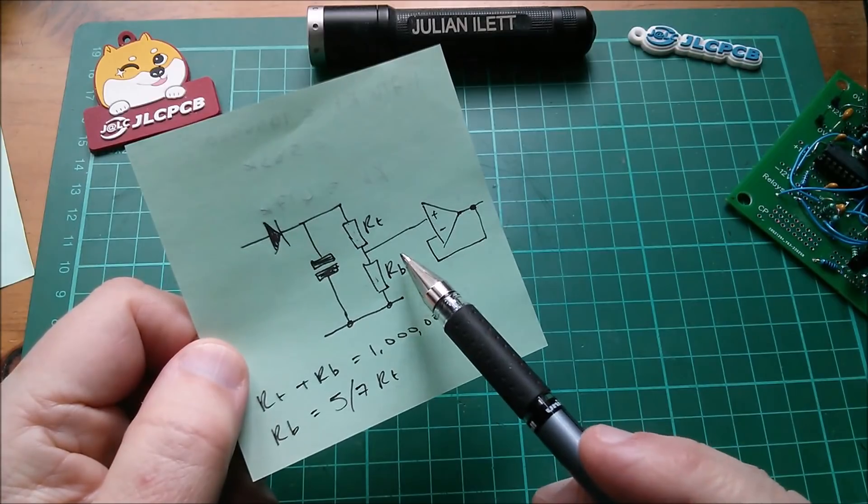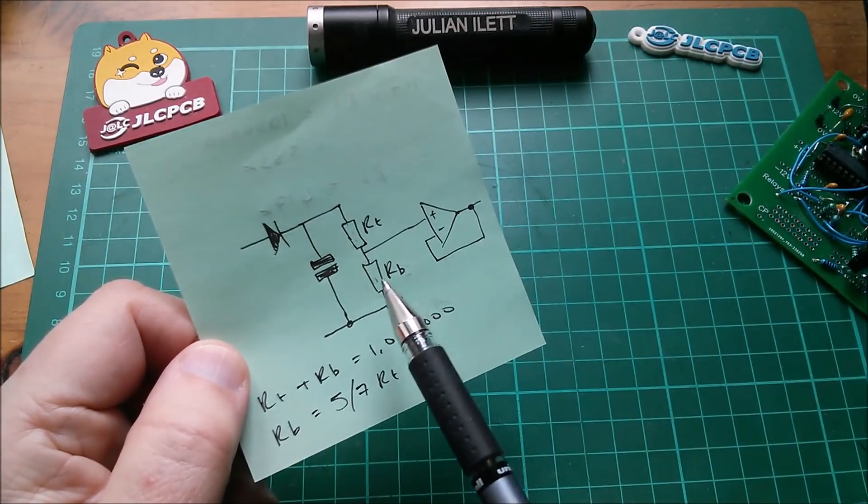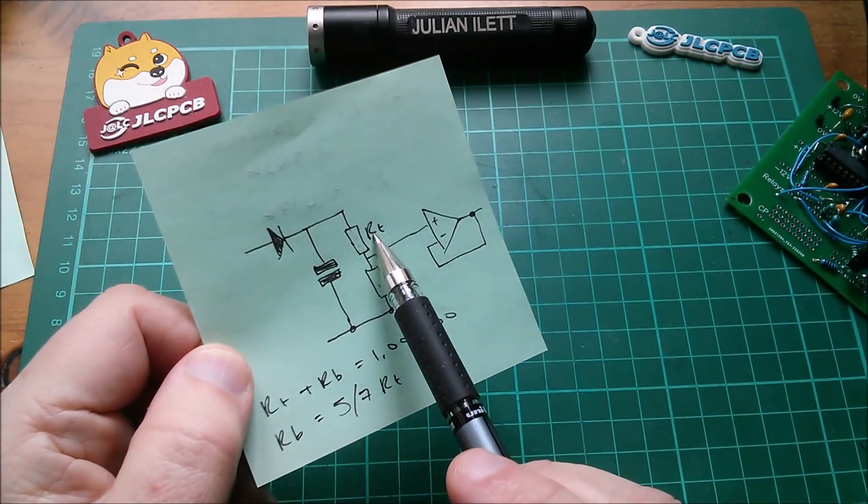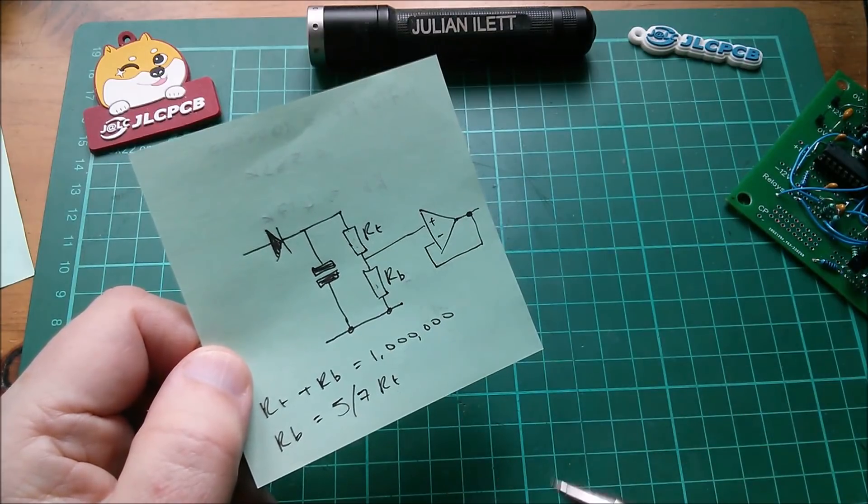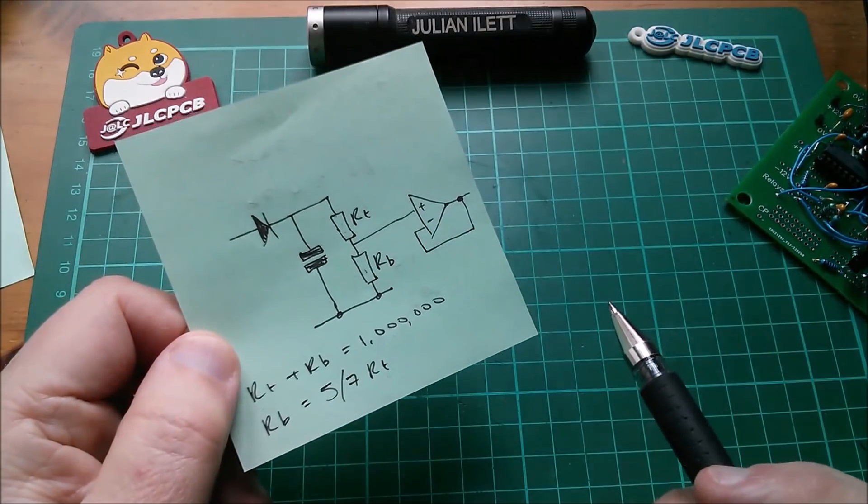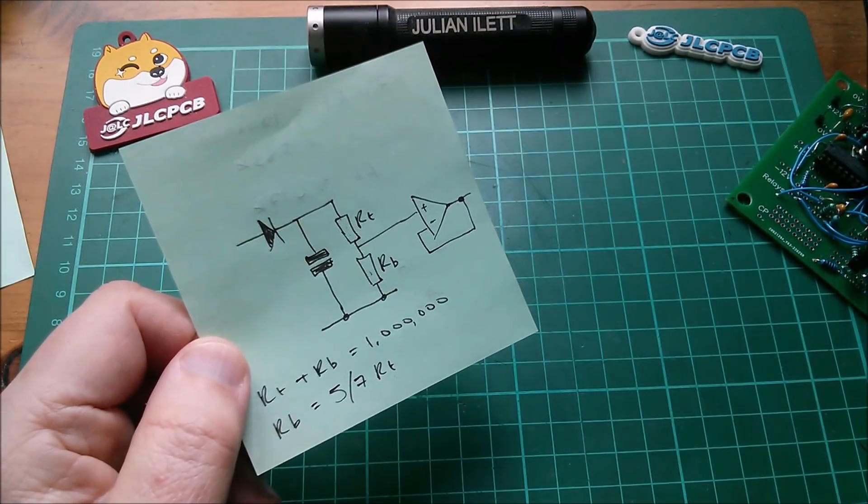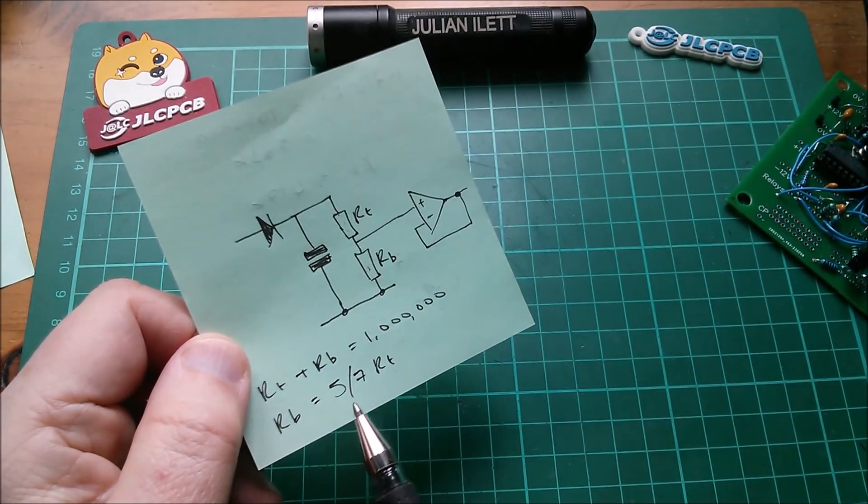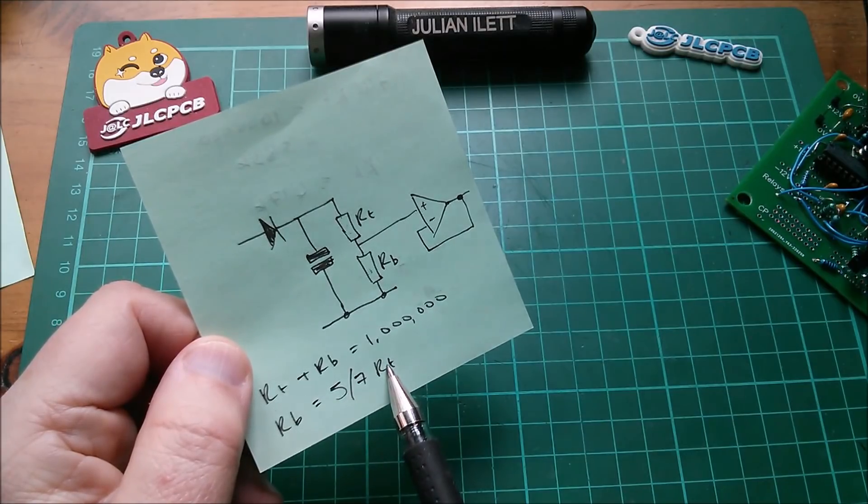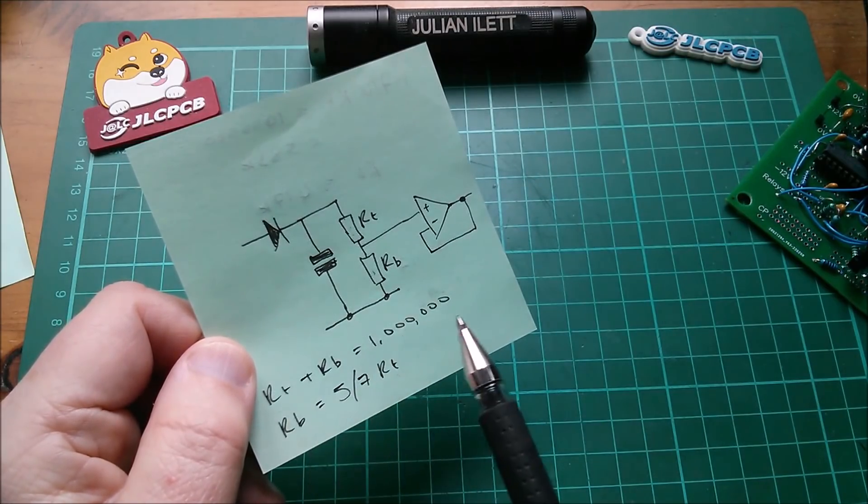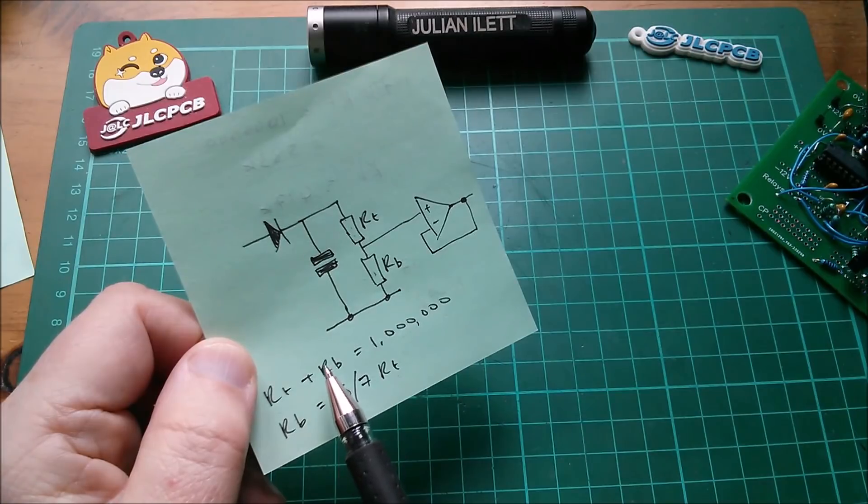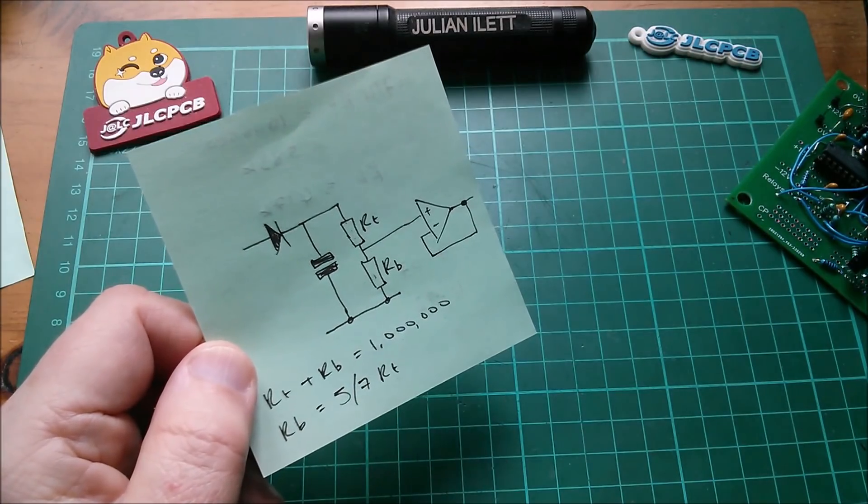So this is a five value with some number of zeros after it, and this is a seven value with some number of zeros after it. So what are these actual values? Well, these are simultaneous equations, so I'm going to have to substitute five-sevenths Rt into the first equation, giving Rt plus five-sevenths Rt equals a million.